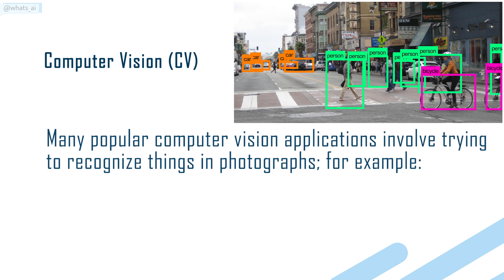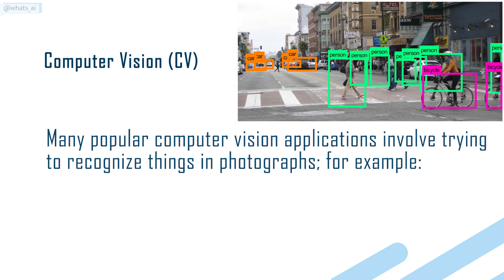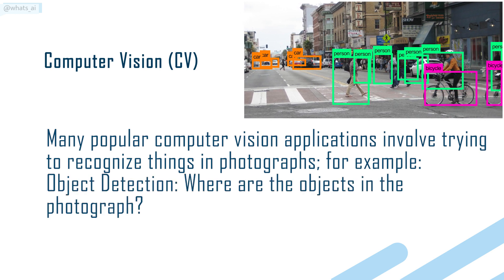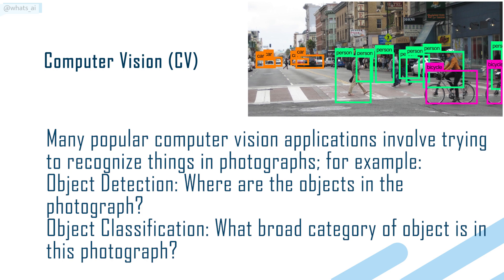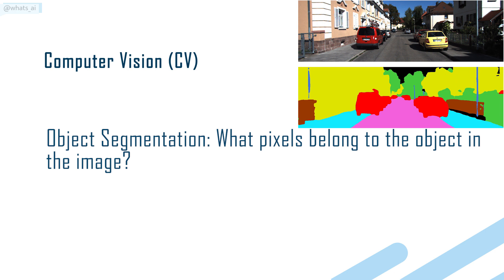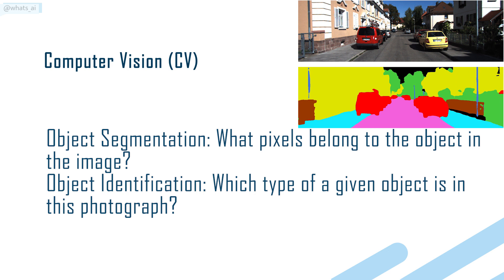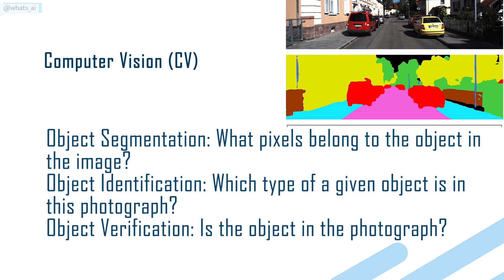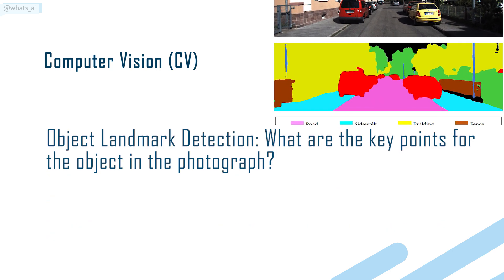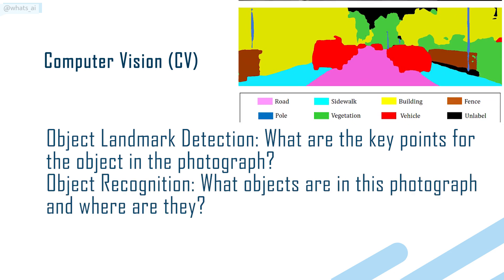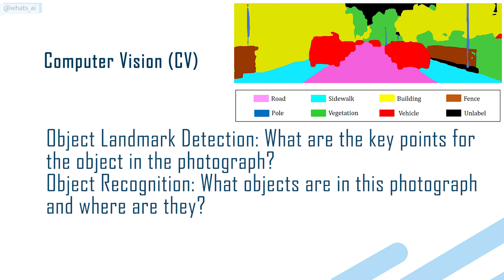Many popular computer vision applications involve trying to recognize things in photographs. For example: Object detection — where are the objects in the photograph? Object classification — what broad category of object is in this photograph? Object segmentation — what pixels belong to the object in the image? Object identification — which type of a given object is in this photograph? Object verification — is the object in the photograph? Object landmark detection — what are the key points for the object in the photograph? Object recognition — what objects are in this photograph and where are they?